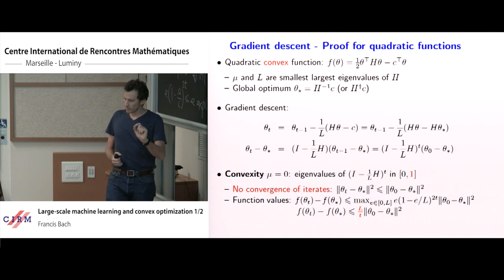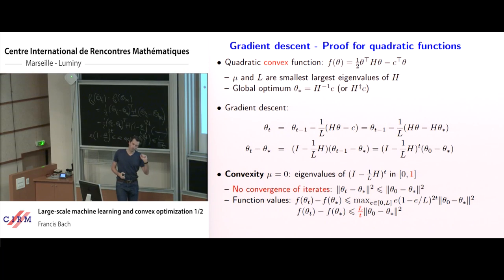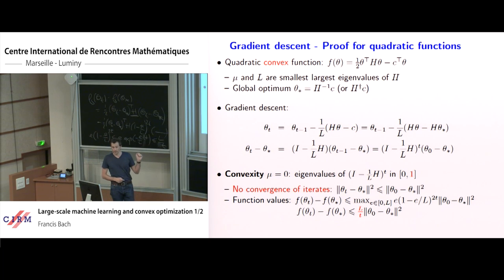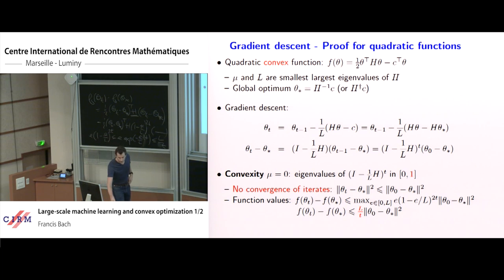This three-line proof works for quadratic functions. For all smooth functions there's a bit more work — you can look at the books by Nesterov or Bubeck for the full proof.